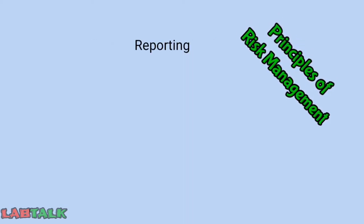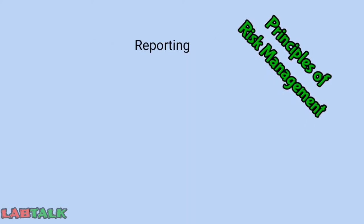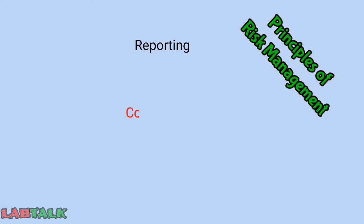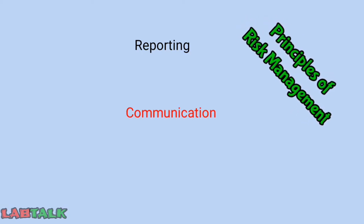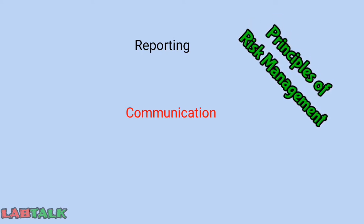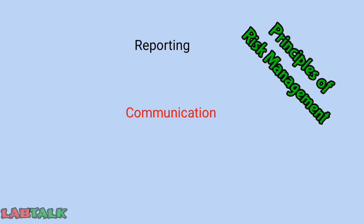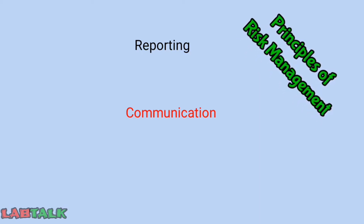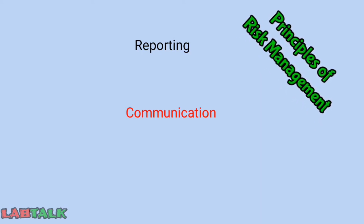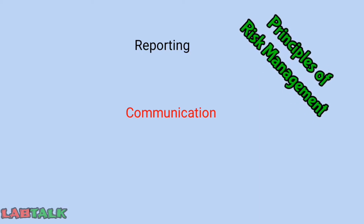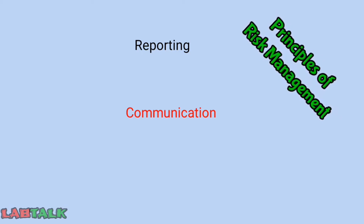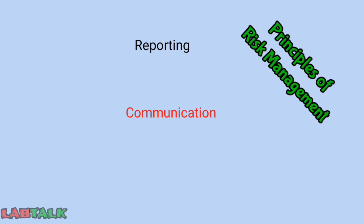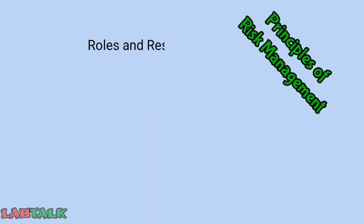The next principle is reporting. In risk management, communication is very important. The authenticity of information and all decisions made must be available to stakeholders and to personnel within the organization. It is essential to communicate all changes and information in risk management appropriately to all stakeholders of the organization.